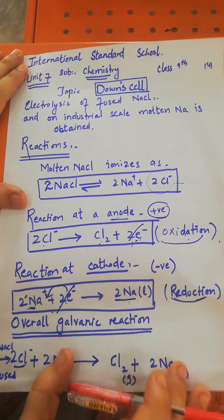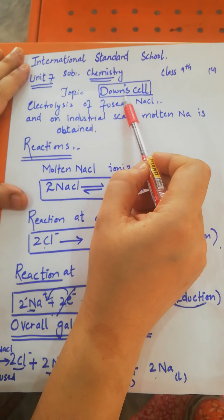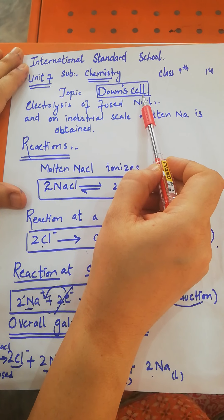Today we are going to start a new topic, the Down Cell, from Unit 7. The Down Cell is a type of electrolytic cell.